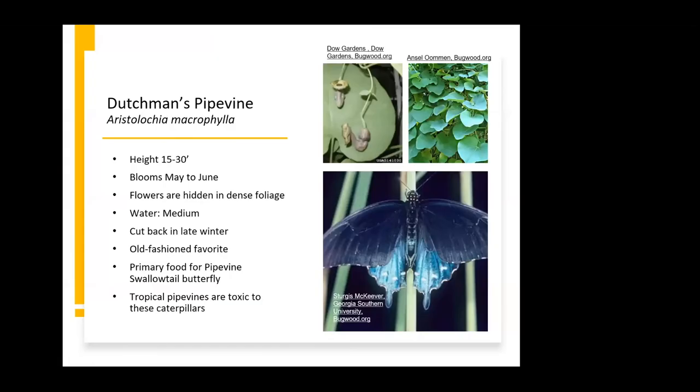Dutchman's pipe vine is available from some local nurseries. It used to be planted quite a bit more often, and it is the primary food source for the pipevine swallowtail butterfly, so it might be a neat one to put in your garden.